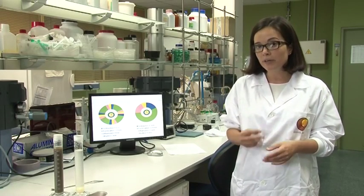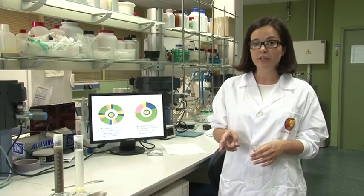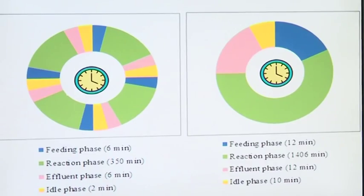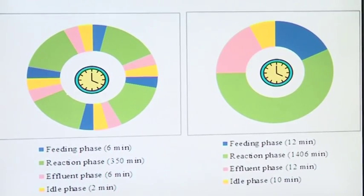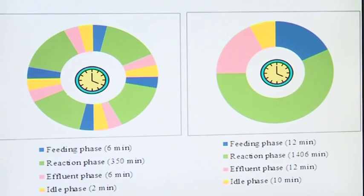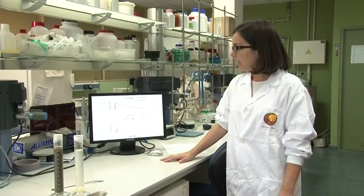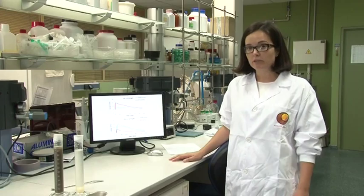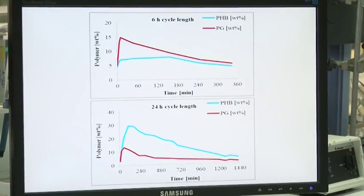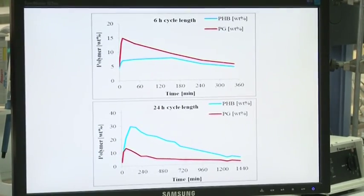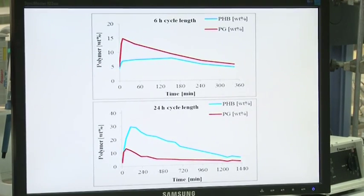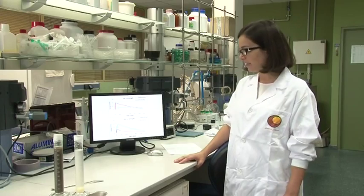We study and compare the performance of two different enrichment reactors. One operates with cycles of six hours, giving four cycles per day, and the second reactor operates with cycles of 24 hours, giving one cycle per day. As we can see, the distribution of glycerol between the two polymers — PHB, which was the form PHA was present in, and polyglucose — was different between the two reactors. You can see the full details of this study in the article.